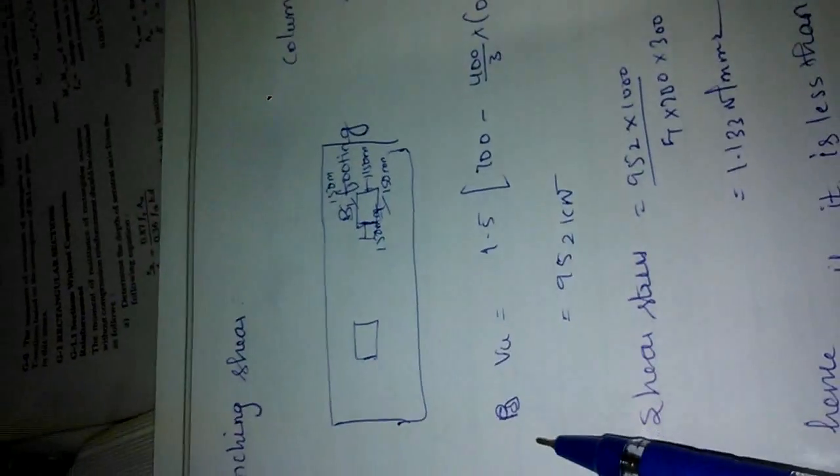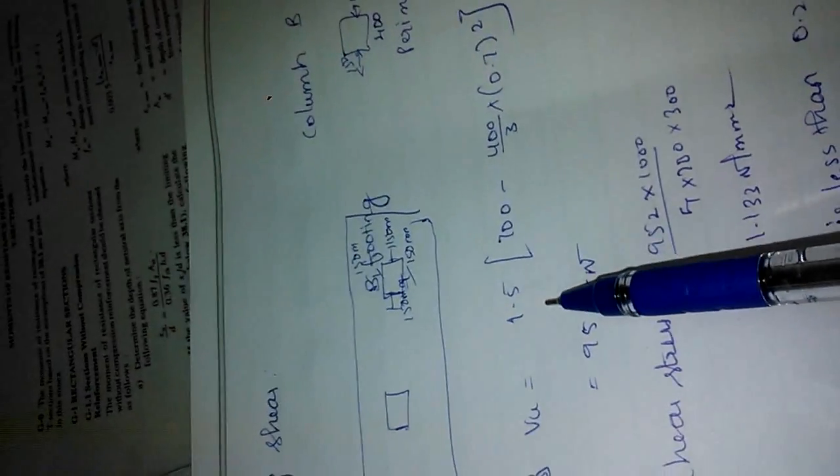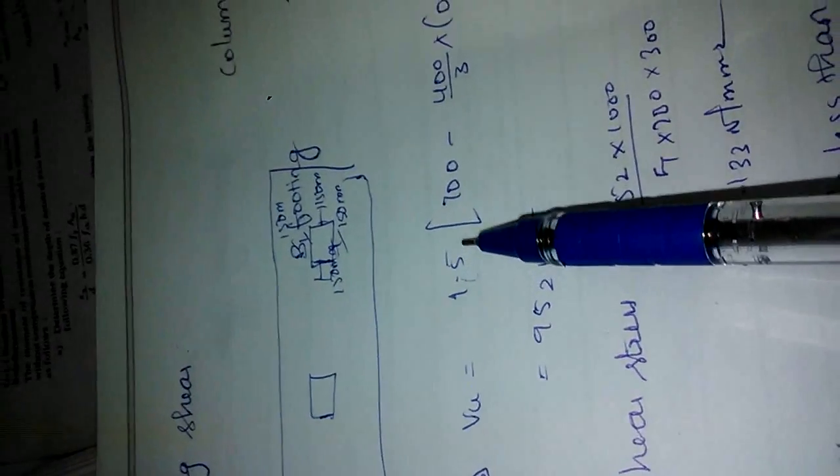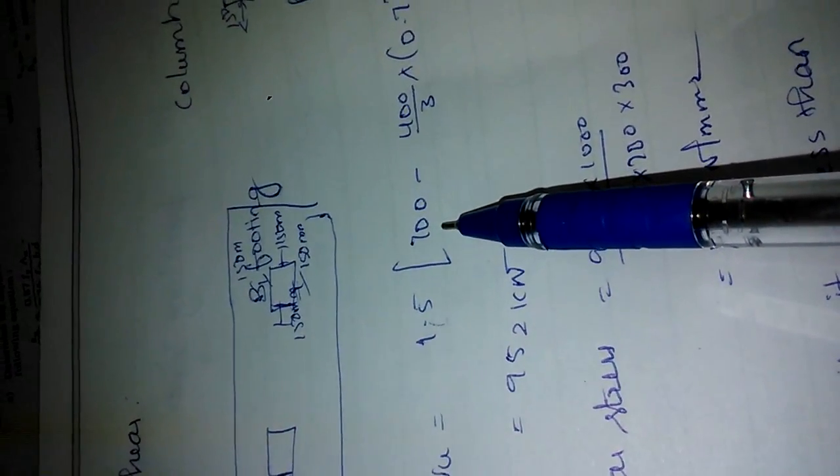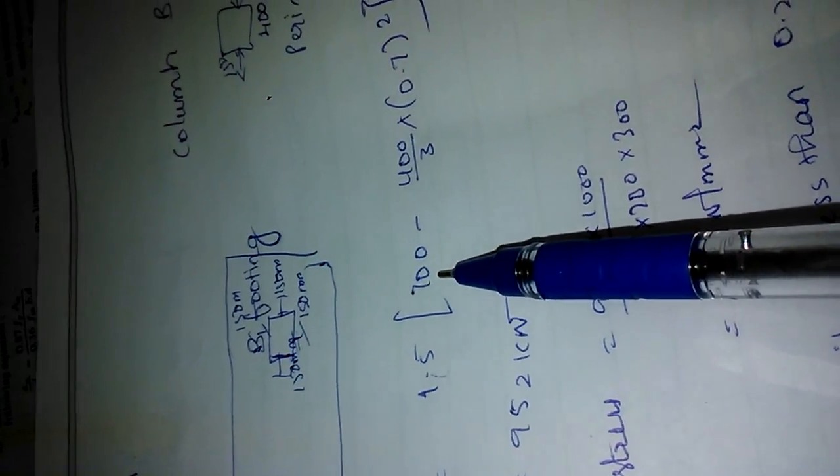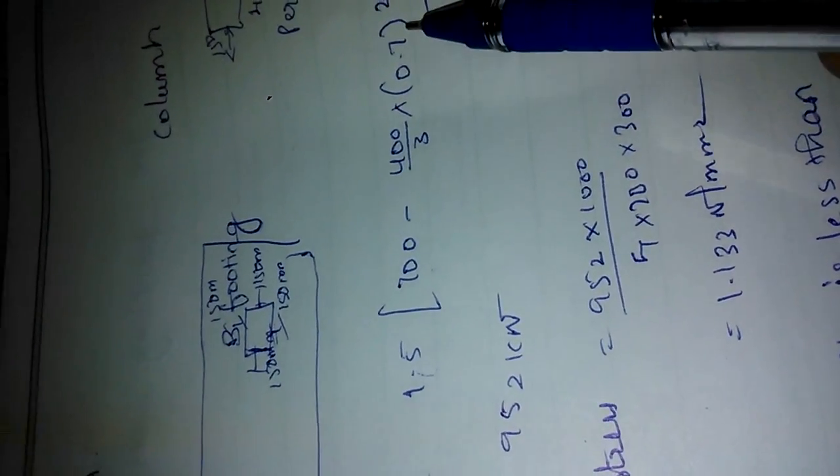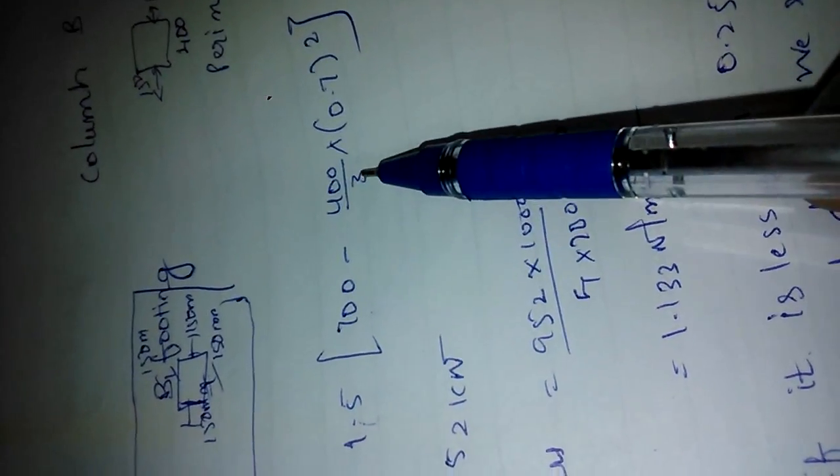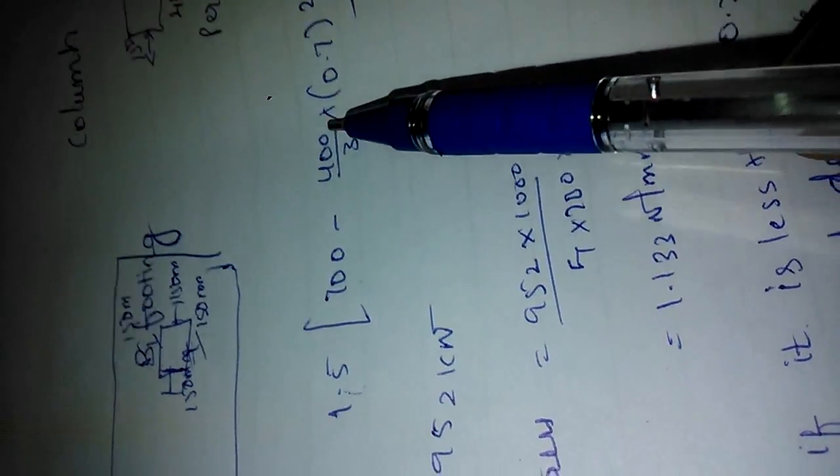We have to find the V value. That is 1.5 is the factor which we are going to multiply to get ultimate moments, ultimate shear force. So the force we get is something which is acting on it. This is SBC and this is the perimeter area. So we multiply SBC into area and we get force. With this we can get the V value and shear stress from the formula force divided by area.